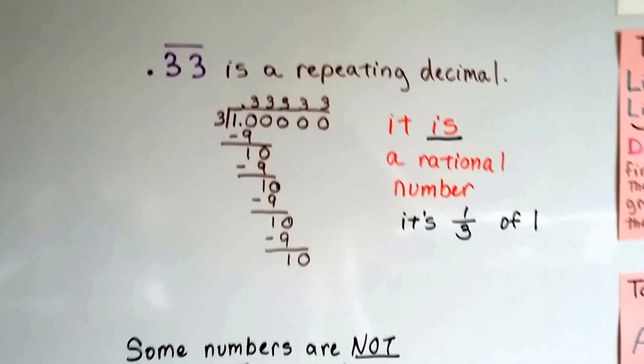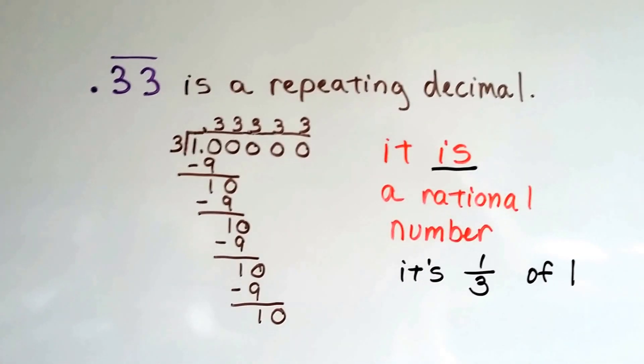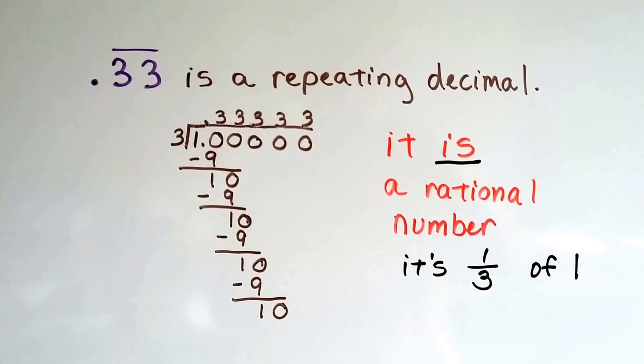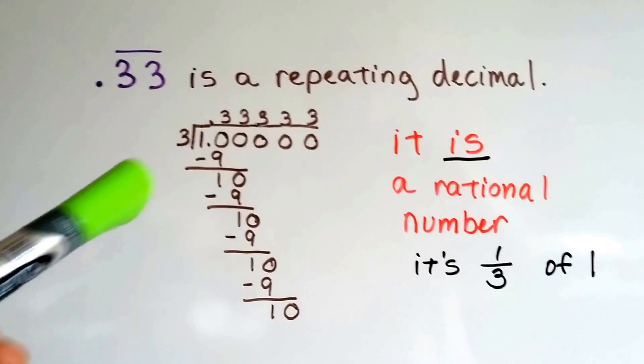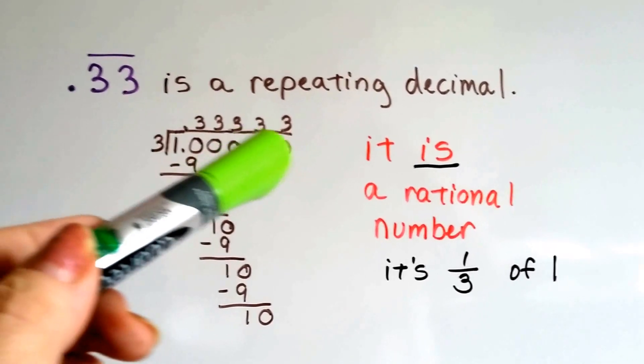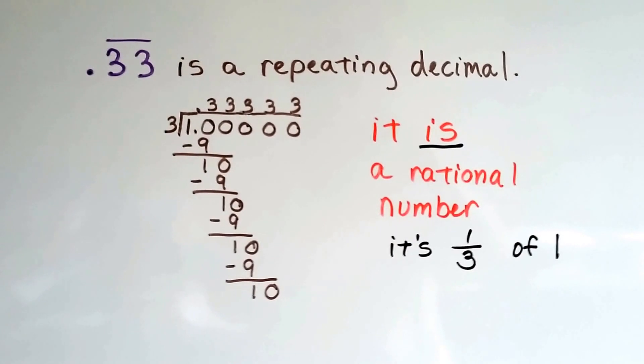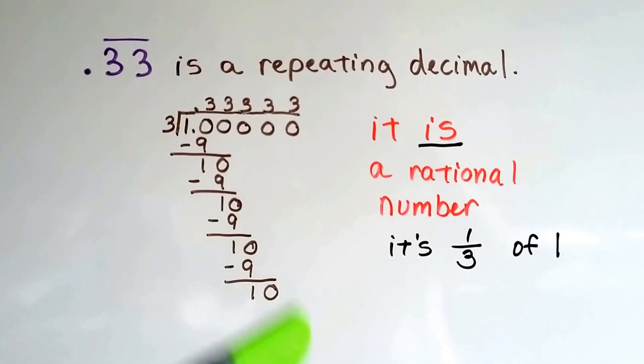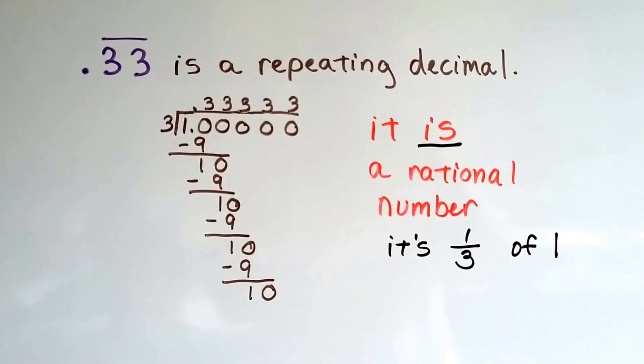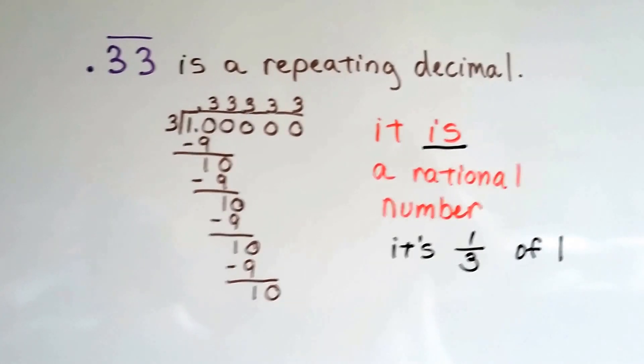And even 0.33 with a repeating 3, it's a repeating decimal. It is a rational number. If we put 3 into 1, we get 0.3333, and it continues on, doesn't it? Because we keep getting a 9 and a 10 and 9 and 10. We keep doing the subtraction and getting 1 and dropping down another 0. But it is a rational number because it's 1 third of 1. It can be written as a simple fraction.